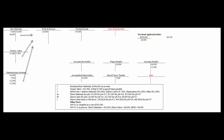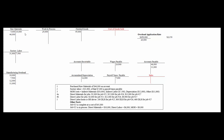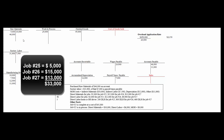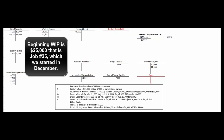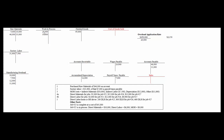We check with Ralph in the materials storage area and he reports that during the month people signed out $5,000 of materials for job 25, $15,000 for job 26, and $13,000 for job 27. So we take $33,000 out of raw materials and move it into work in process. Remember, job 25 started before January and had some costs already assigned, so now work in process has that job along with its new materials.